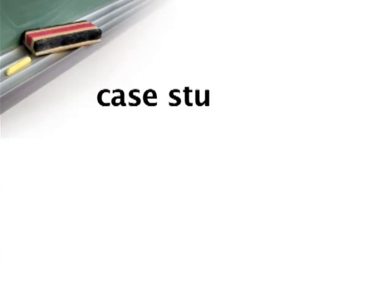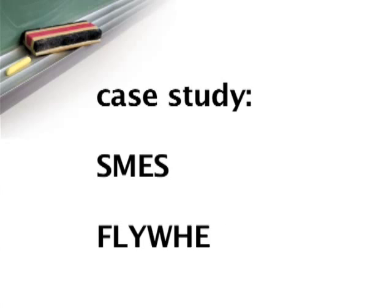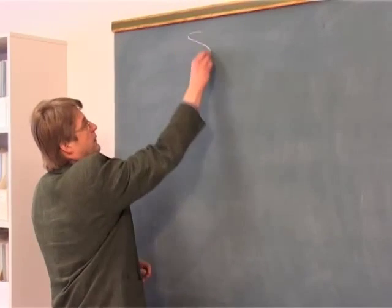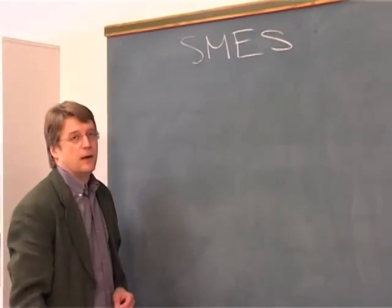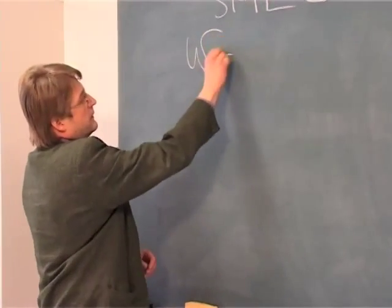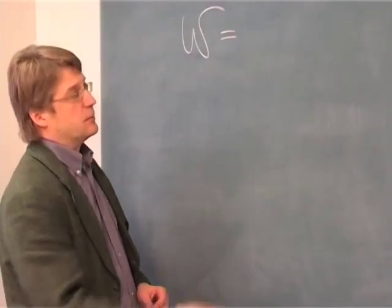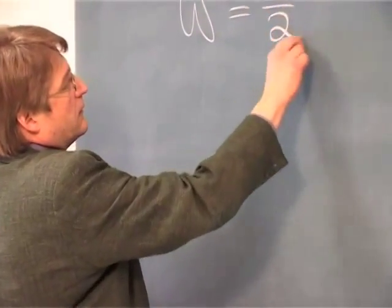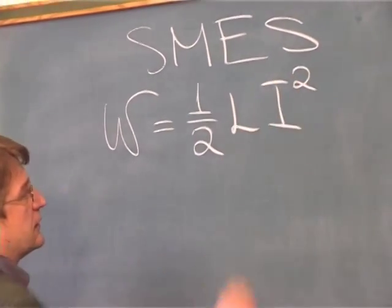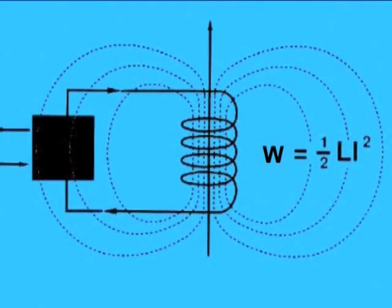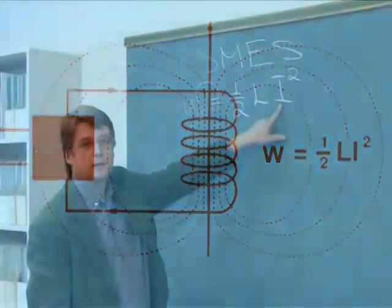As I said, we have two ways to store energy. And the first one is SMES. And the energy which we can store can be given with a quite simple equation: 0.5 times inductance times the current squared. So this L means the inductance of the coil, and I is the coil current.